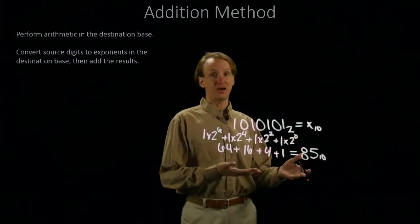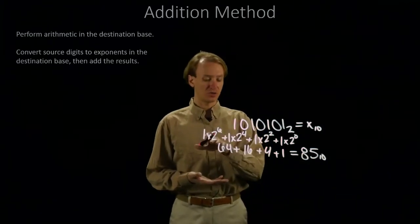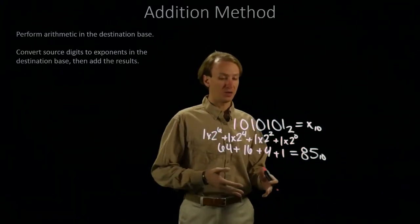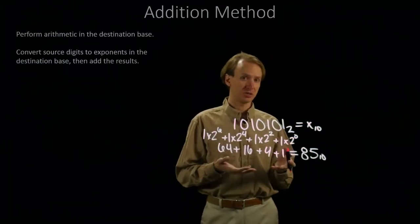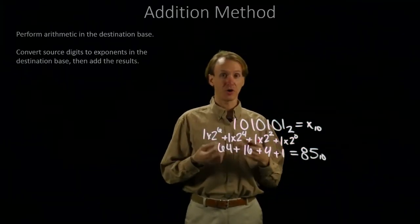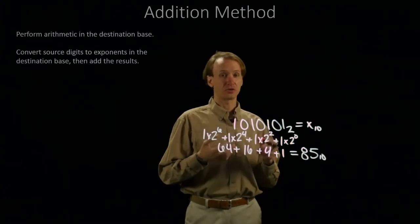So that's the basic idea of how the addition method works. We're just converting these, finding their exponents, and adding all of that up. It works reasonably well for bases where you know the exponents. Things like binary you'll probably get used to working with, so it can be relatively easy to convert small numbers.